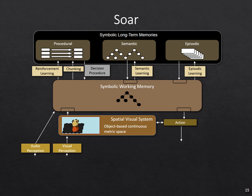Above the symbolic working memory, SOAR also has long-term memories where it learns new concepts and new skills. At the left is procedural memory, where skills are encoded as symbolic rules. It also has semantic memory, where it encodes knowledge about the world similar to facts. And then there's episodic memory, where there's knowledge about past experiences.